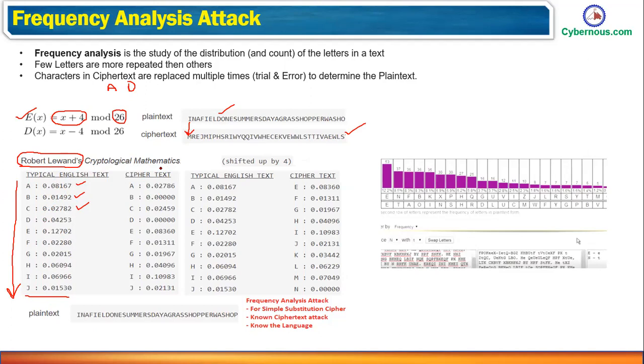And then you will analyze a particular ciphertext and will count the number of repetitions for a particular character. And then based on that, you are going to evaluate, okay, this is the ideal one what we have in the English language. And this is what we have in the particular ciphertext.